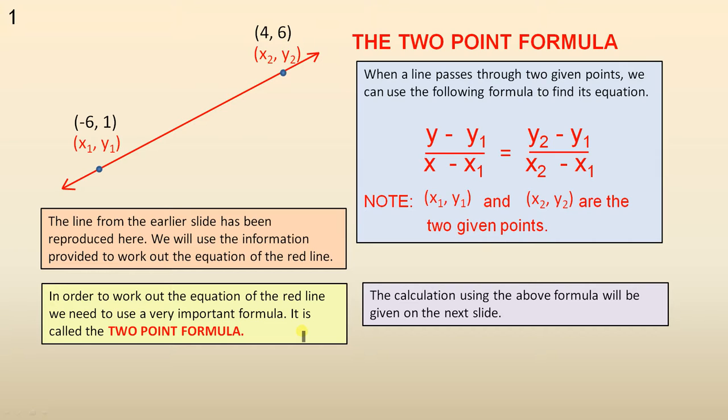It is called the two-point formula. Now here it is. When a line passes through two given points, we can use the following formula to find its equation.